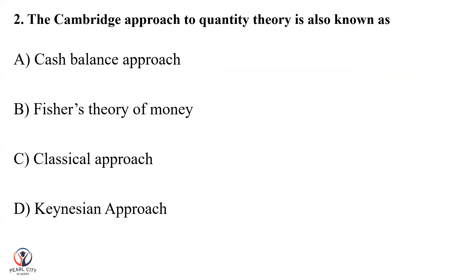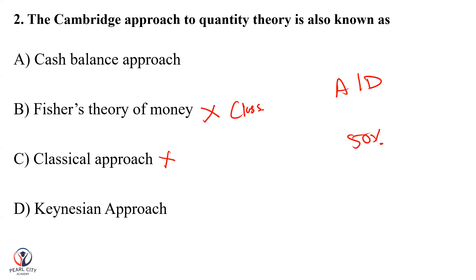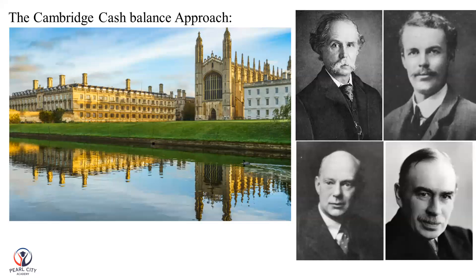Now, the Cambridge approach to quantity theory of money. This is also a classical approach. If you are asked a question about the option — whether classical approach, elimination method, AR or DR — the answer relates to the cash balance approach. What is the cash balance approach? This is Cambridge. If you are asked a question, Cambridge is the answer.